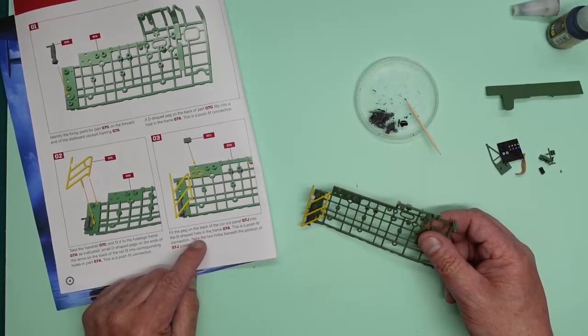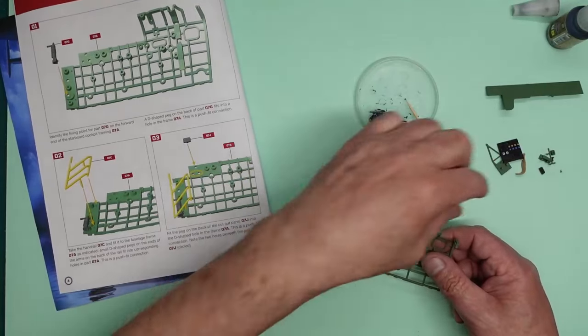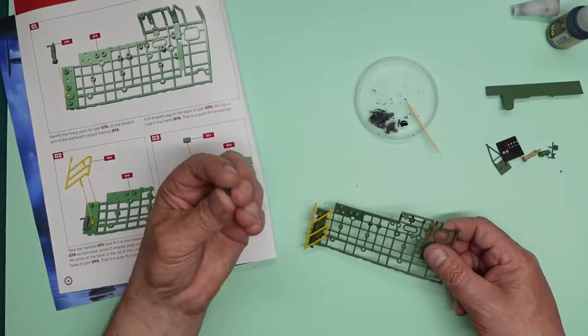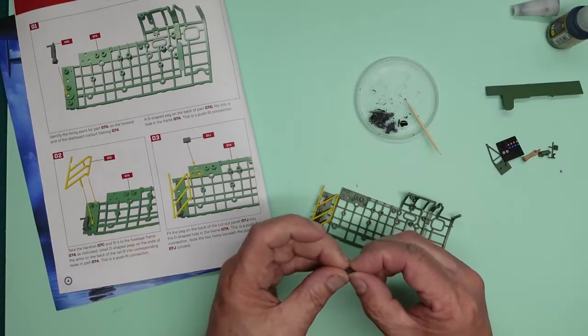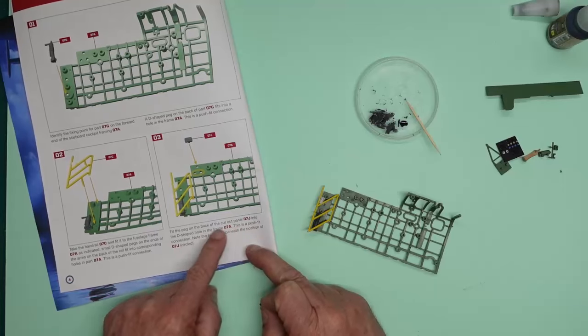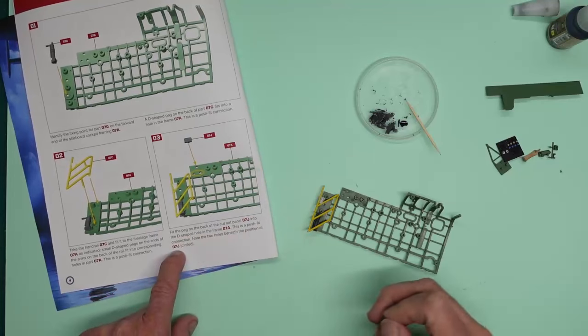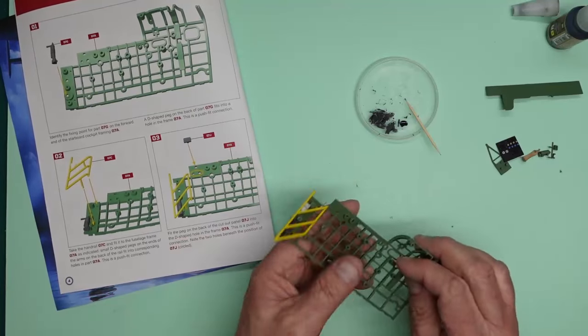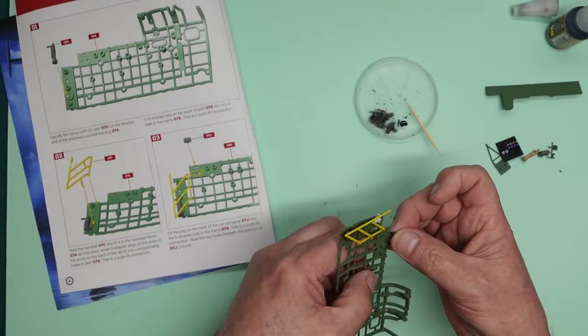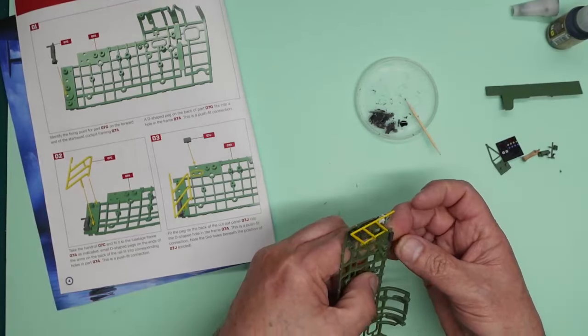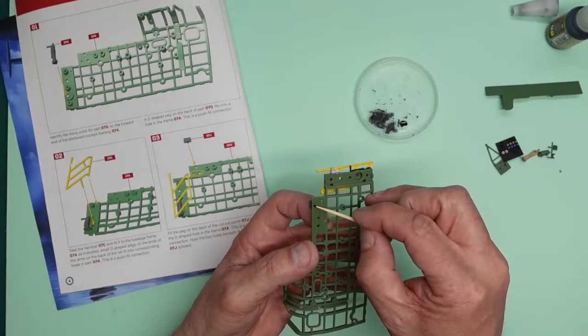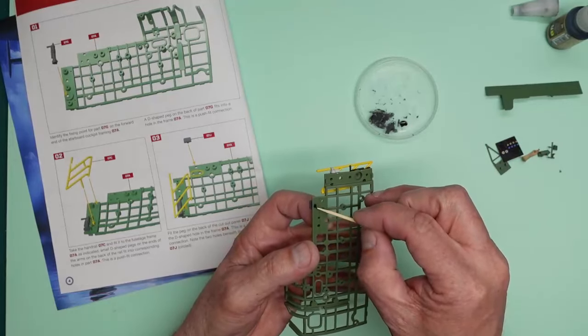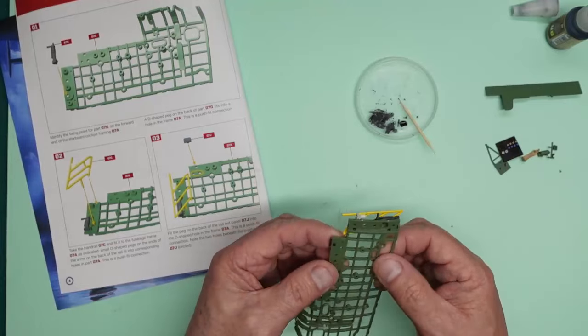And then we're going to take the control panel. This is 07J and that is going to fit the peg at the back of the cutout into the D-shaped hole. This is a push fit connection. Note the two holes below the position of 07J. So it's telling us to note those two holes. We don't fit this in there. This is going to go into there like so. And once again, I'm going to put a drop of superglue on the back.